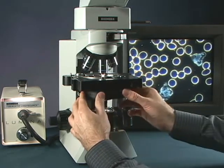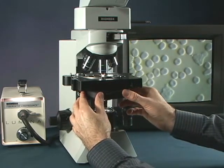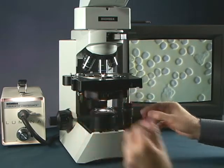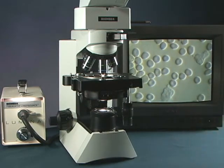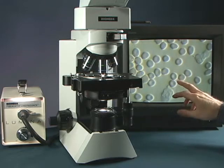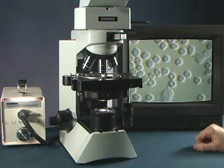If you wanted the three-dimensional perspective, we simply shift it slightly off of the dark field position, and now we have a three-dimensional perspective. So we can actually see the concave appearance of the red blood cells.